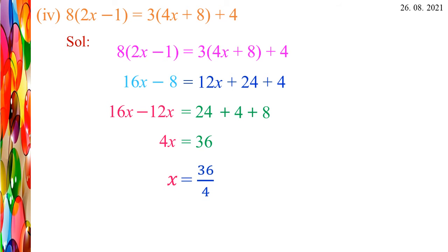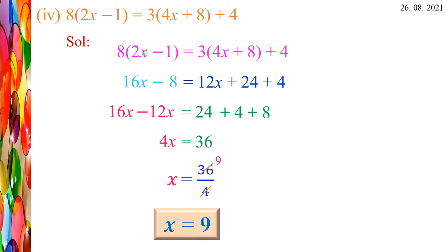Now X = 36/4. Transposing 4 to the RHS: X = 36/4. Cancel the common factor: 9 fours are 36. So X = 9. The X value is 9.